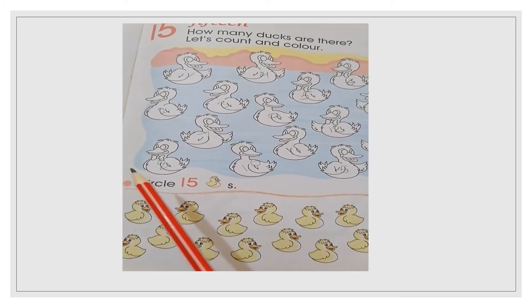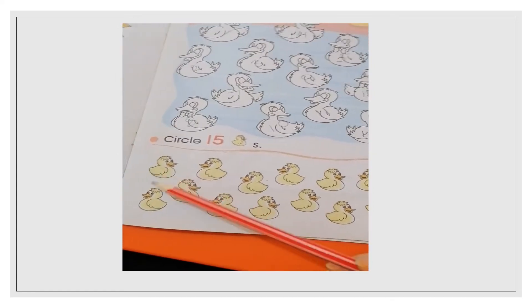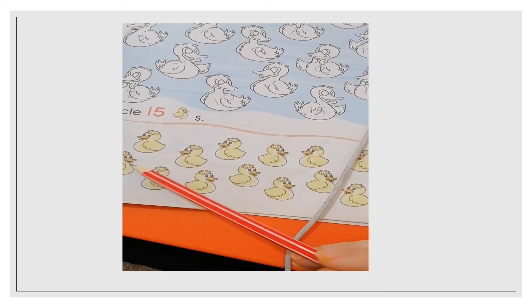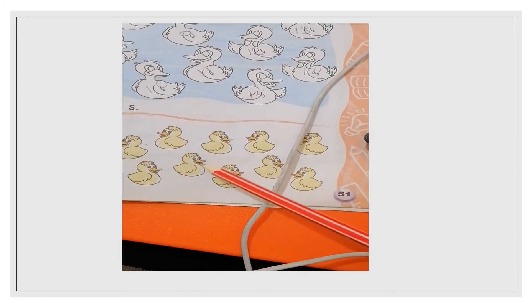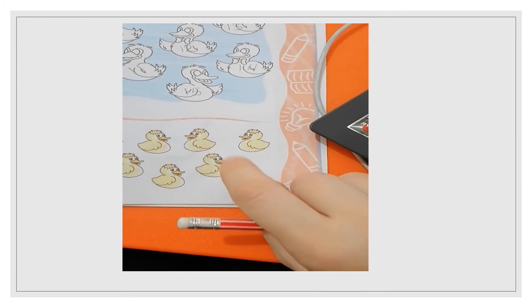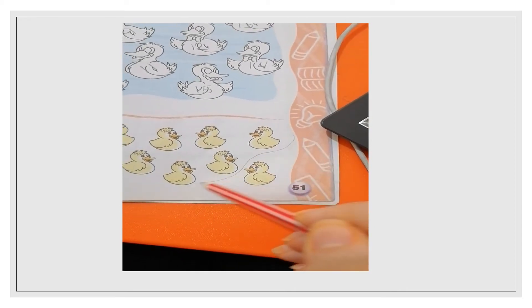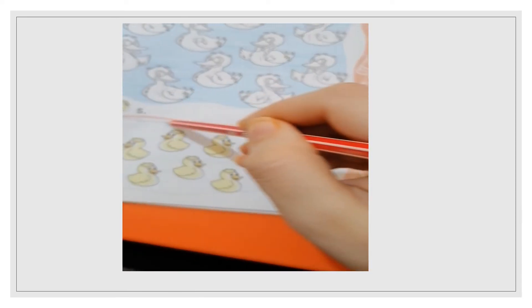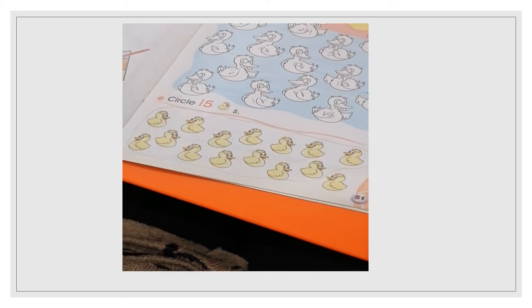Now we will circle 15 ducks. 1, 2, 3, 4, 5, 6, 7, 8, 9, 10, 11, 12, 13, 14, 15. We will circle all the colors and leave 1. Here we have 15.